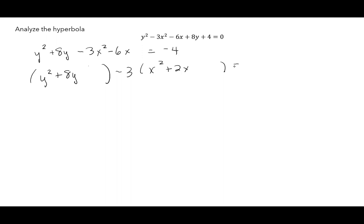Leave a little space and write your -4. To complete the square, take the number in front of the y, which is 8, divide by 2, and square it. Same thing with x: the number in front is 2, divide by 2, then square it.